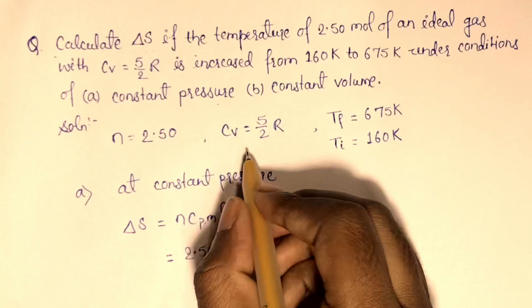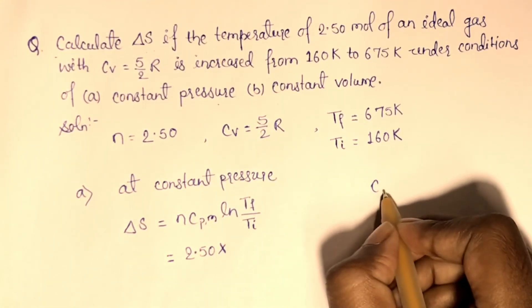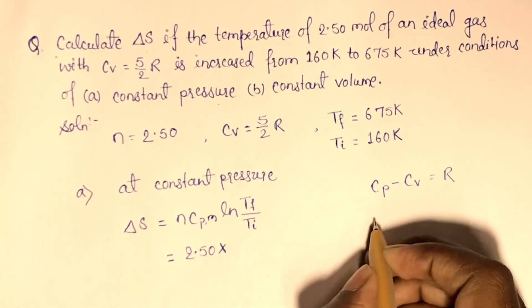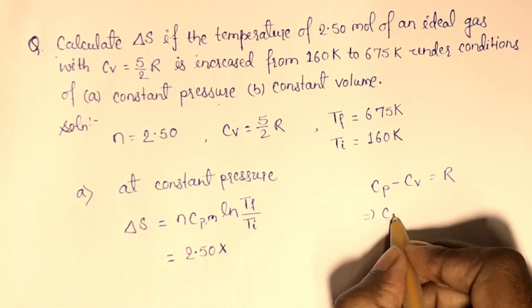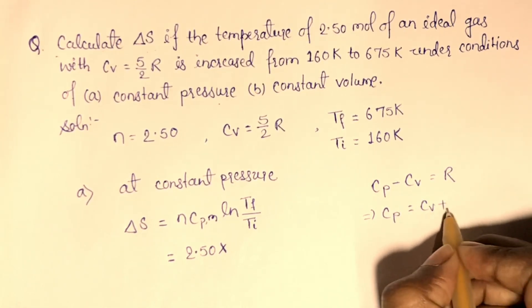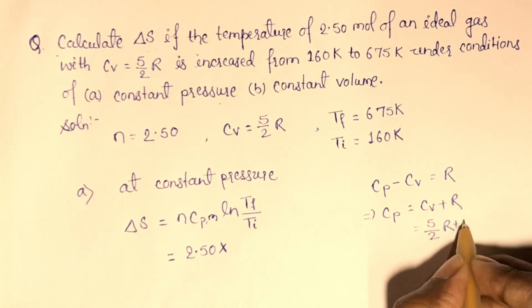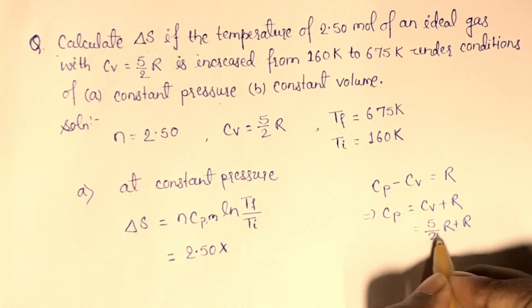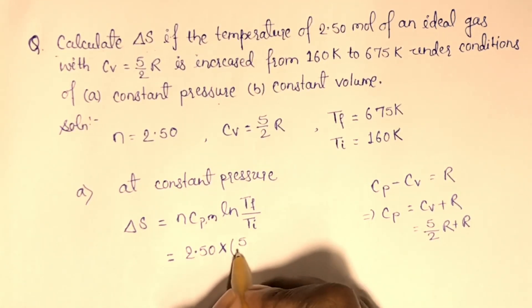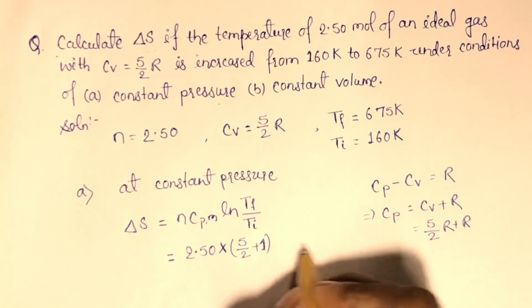Here CPM is not given but we know that there is relation between Cv and Cp. Cp minus Cv equal to R and here Cv is given so we will put the values of Cv. Cp equals Cv plus R and Cv is given 5 by 2 R plus R. Now we will put the value of Cp: 5 by 2 plus 1 and R.